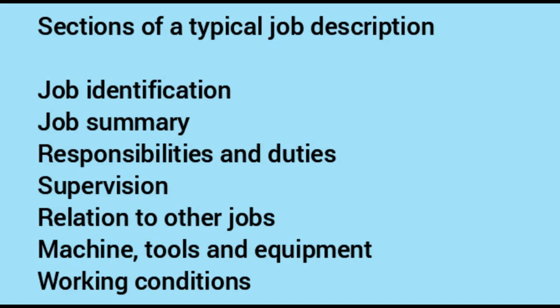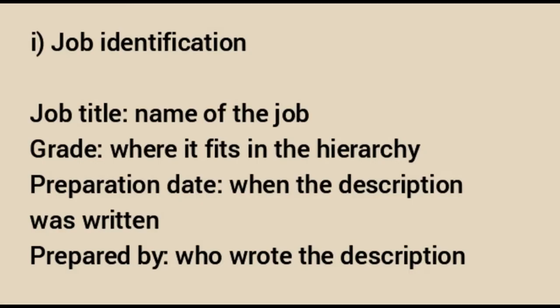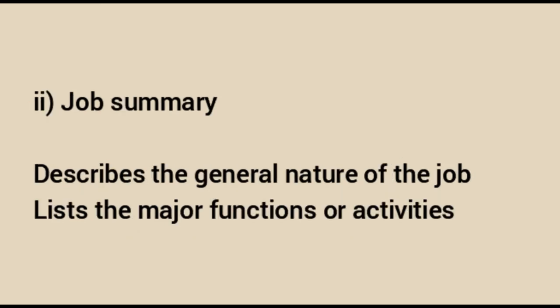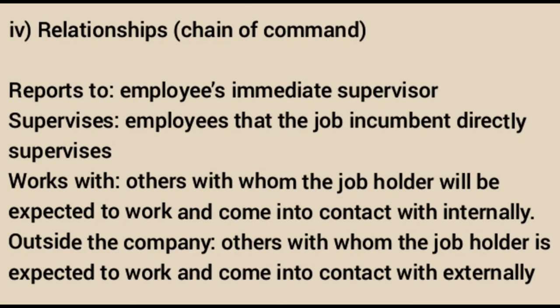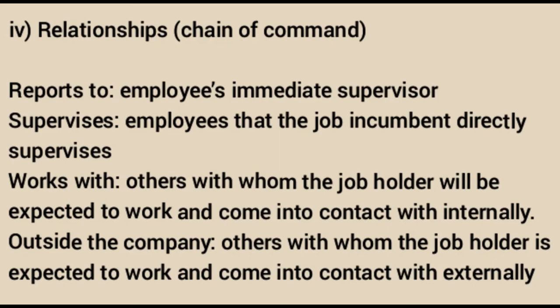Breaking down the job description further: job identification covers the job title, grade or hierarchy placement, preparation date, and who wrote the description. Job summary describes the general nature of the job and lists major functions or activities. Job duties and responsibilities detail what needs to be done and how. The relationships section covers the chain of command — who the employee reports to, who they supervise, and who they work with internally and externally.